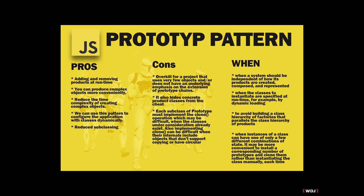Moving on to the cons: it's overkill for a project that uses very few objects or doesn't have an underlying emphasis on extension of prototype chains. It also hides concrete product classes from the client. Each subclass of prototype must implement the clone operation, which may be difficult when the classes already exist. Also, implementing clone can be difficult when internals include objects that don't support copying or have circular references.